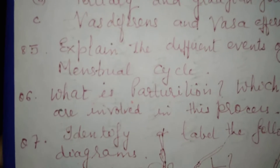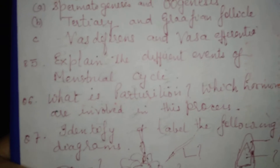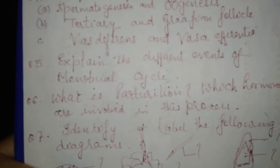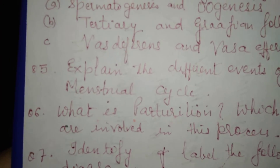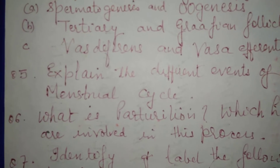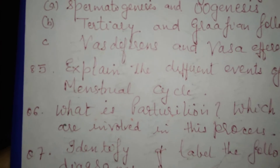The next question is: explain the different events of the menstrual cycle. You all know the menstrual cycle is also called the reproductive cycle. You have to write the different events and all the different phases.